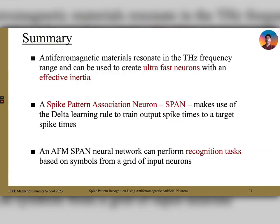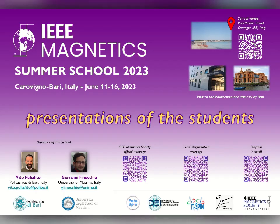In summary, antiferromagnetic materials can resonate at a terahertz frequency range and can be used to create ultra-fast neurons with effective inertia. The SPAN algorithm makes use of the delta learning rule to train output spike times to target spike times. And finally, the AFM SPAN neural network can perform recognition tasks based on symbols made from an input grid of neurons. Thank you for your attention.